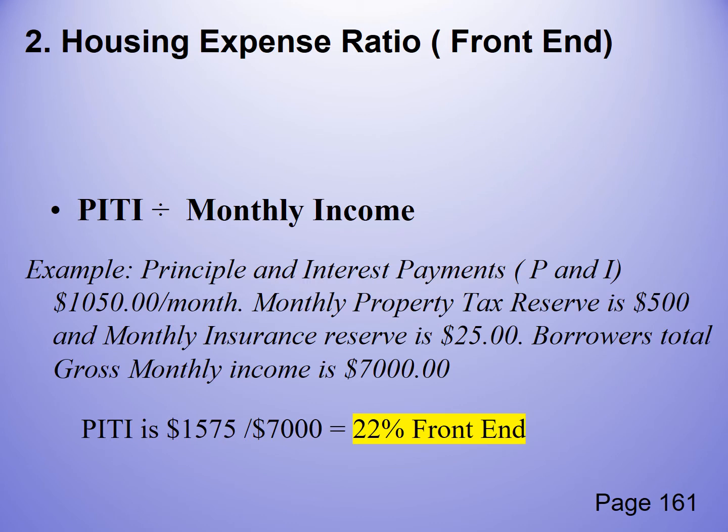The housing expense ratio — this important one we want to know — is PITI divided by monthly income. Your principal and interest payments plus property tax reserves plus insurance reserves, divided by total gross monthly income. So if the PITI in this example is $1,575 and the monthly gross income is $7,000, our front end ratio is 22%.